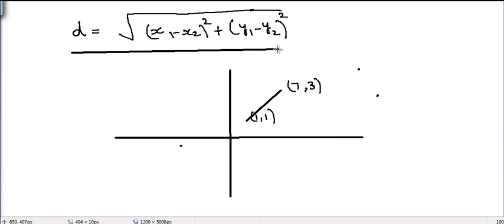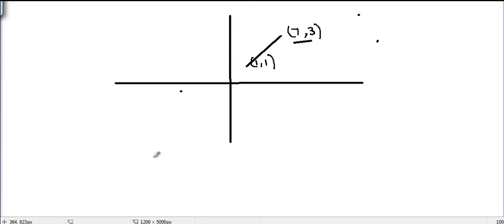Now according to this formula, we can easily calculate the distance between these two points (1, 1) and (7, 3). We just need to apply the formula, so the value of D would be square root of